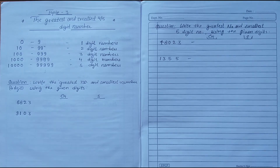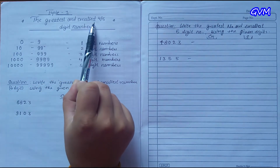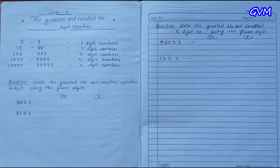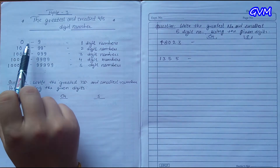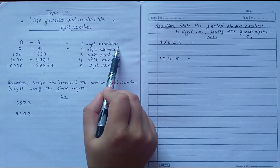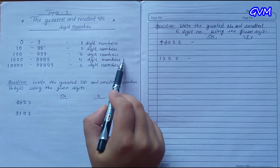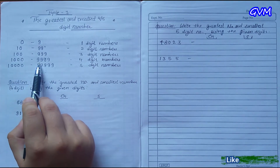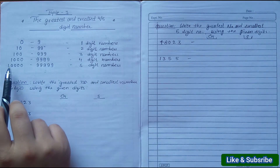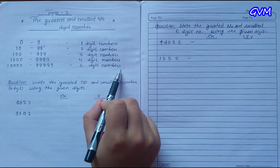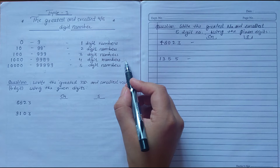Hello students, today we are going to discuss the next topic: the greatest and smallest four and five digit numbers. We have one digit, two digit, three digit, four digit numbers and so on. Zero to nine are one digit numbers, 10 to 99 are two digit numbers, 100 to 999 are three digit numbers, and 1000 to 9999 are four digit numbers, and 10000 to 99999 are five digit numbers.